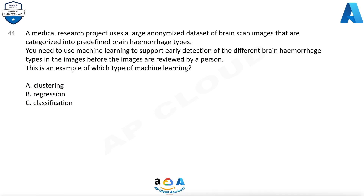Question 44: A medical research project uses a large anonymized dataset of brain scan images categorized into predefined brain hemorrhage types. You need to use machine learning to support early detection of the different brain hemorrhage types in the images before they are reviewed by a person. This is an example of which type of machine learning? A) Clustering, B) Regression, C) Classification.